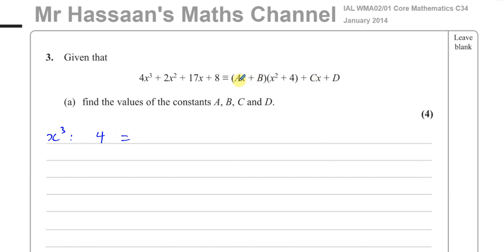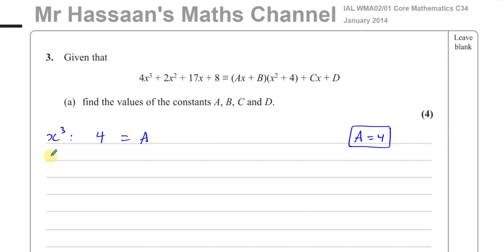On the right-hand side, if we expand these brackets, the C and D terms will not have any x-cubed terms. But when I multiply out this bracket, Ax times x-cubed gives Ax-cubed. The only x-cubed term will be Ax times x-cubed, so that's Ax-cubed. We know that A is equal to 4 straight away. So we've found A = 4 just by looking at the x-cubed terms.